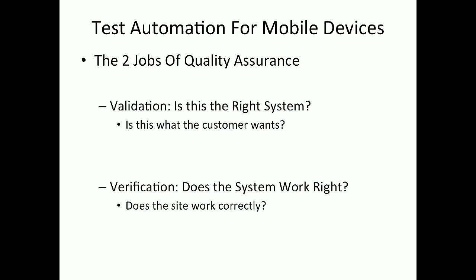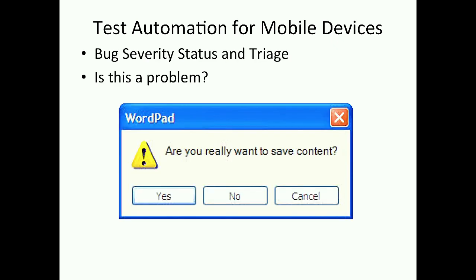Two other jobs of quality assurance: validation and verification. Validation — is this the right system? Very often you're developing some nice software that looks really cool, that works really well, but it's not what the customer wanted. So make sure you're developing what the customer wants. And verification — does the system work right? Let's get to some actual examples.